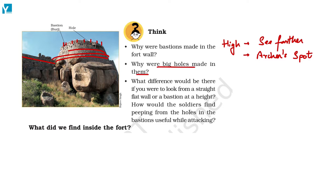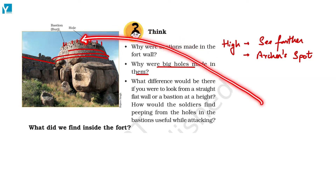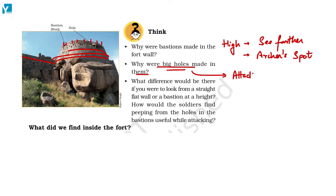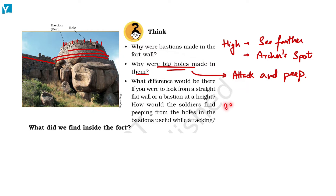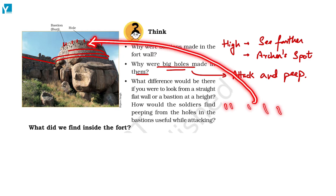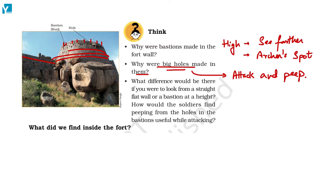There were big holes in the bastions, meant for peeping and attacking. If archers are standing here and they attack from the ground level, someone could attack back with arrows or cannons. So they used these holes to attack and peep through. It is quite easy to attack from a small hole onto a large crowd, but very difficult for a large crowd to attack exactly through that hole. So it is quite safe for someone guarding the fort.